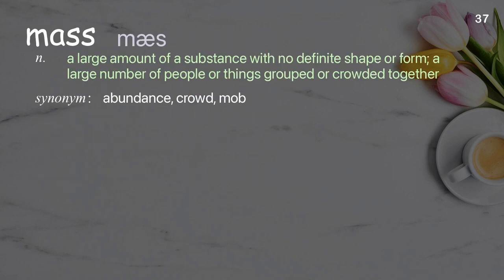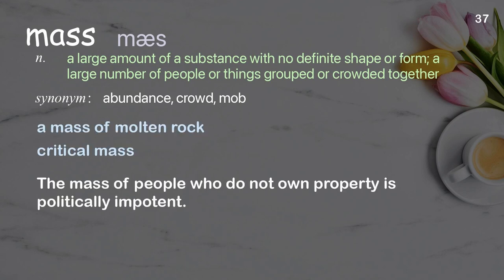Mass: a large amount of a substance with no definite shape or form; a large number of people or things grouped or crowded together. Examples: a mass of molten rock, critical mass. The mass of people who do not own property is politically impotent.